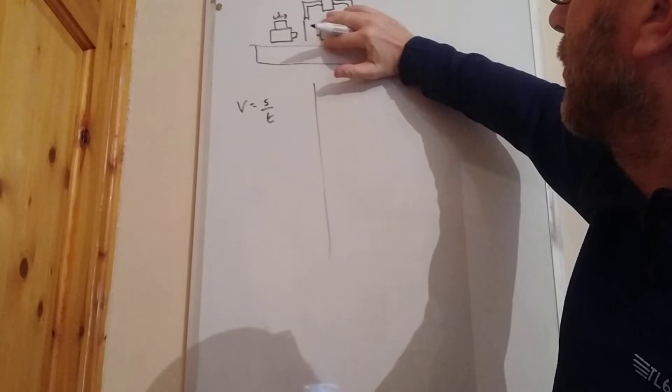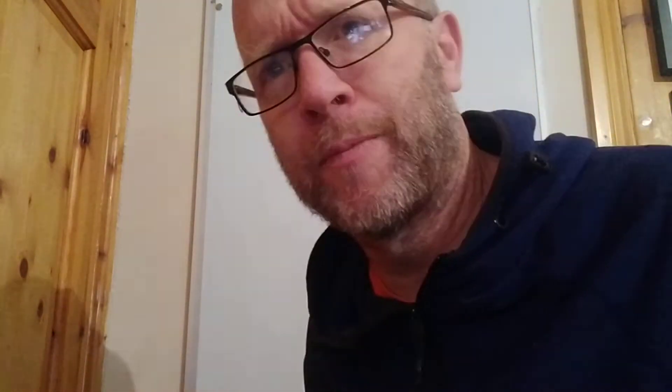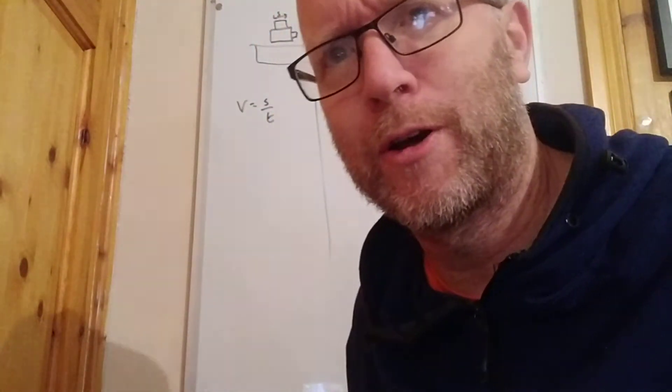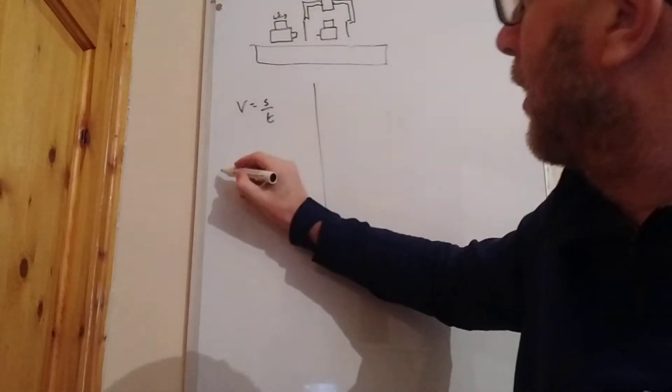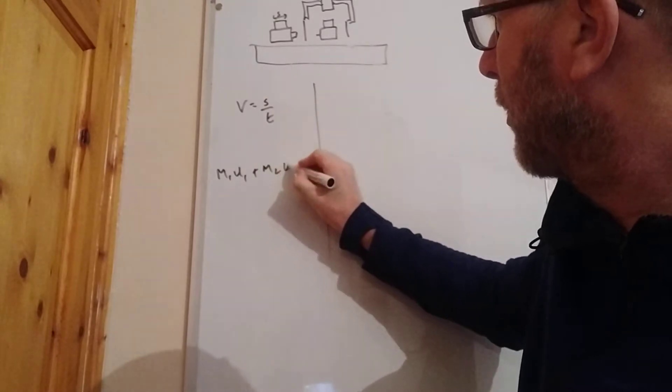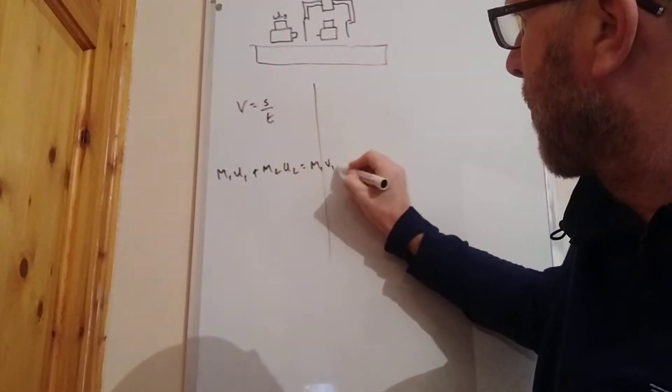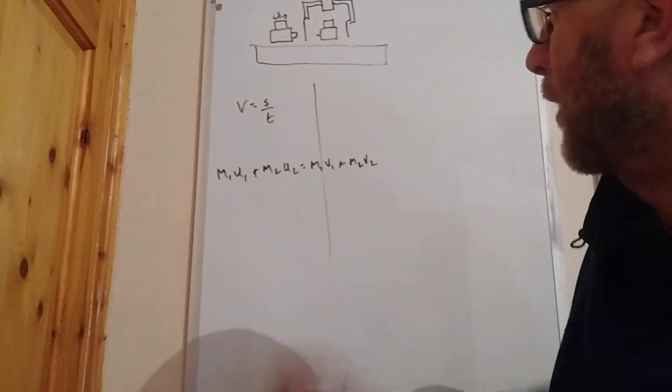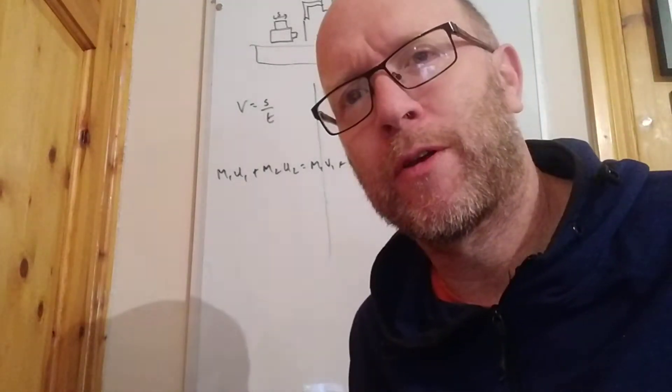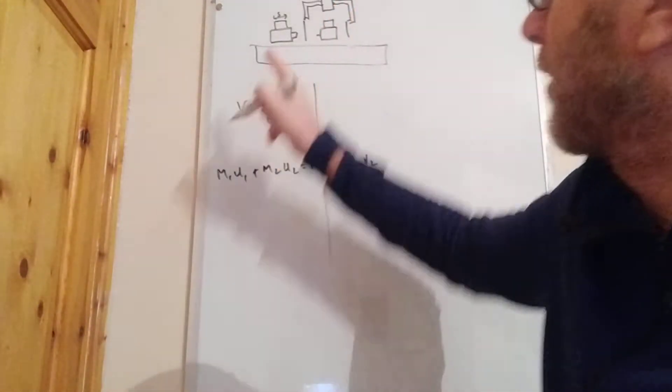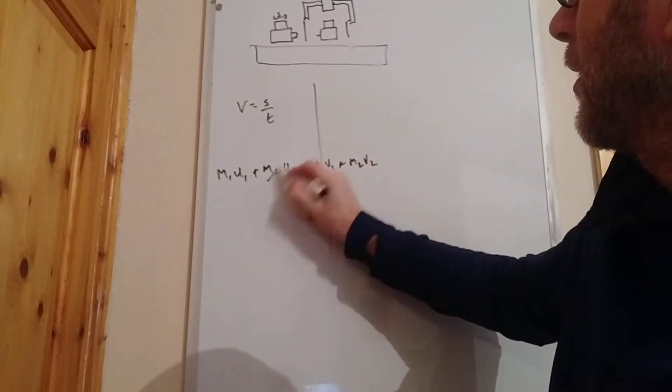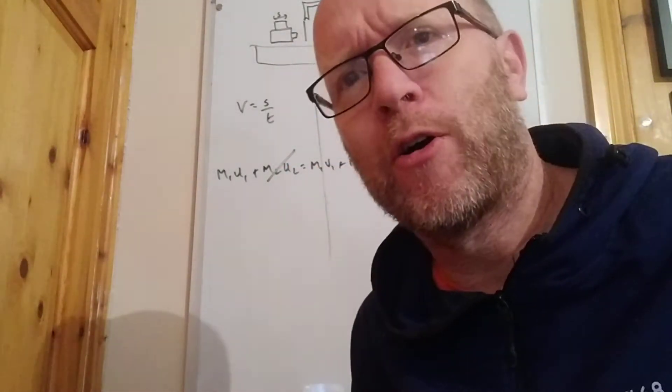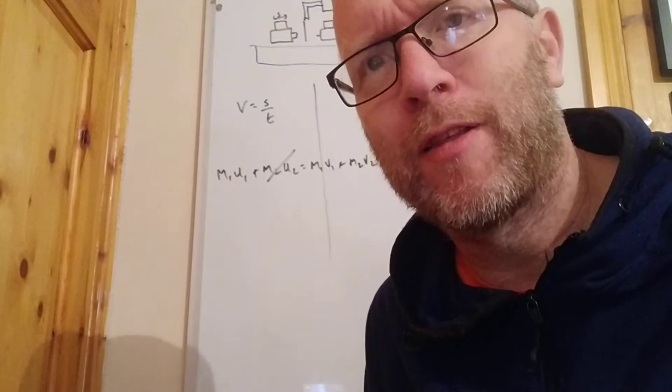For the velocity experiment, you're not using the second rider and you're not using the second timer. Second experiment: conservation of momentum. Remember the famous formula: m₁u₁ + m₂u₂ = m₁v₁ + m₂v₂.